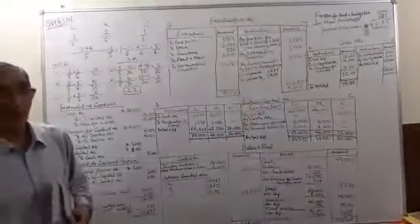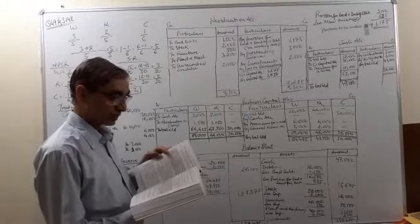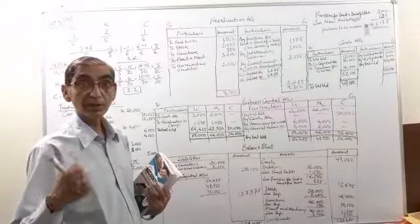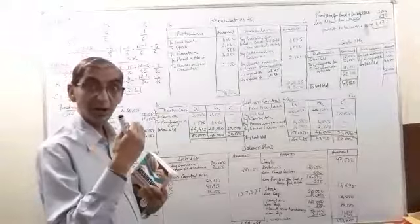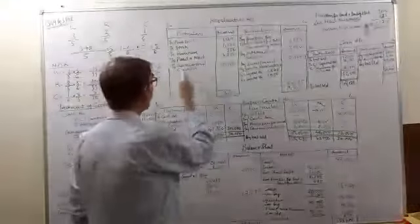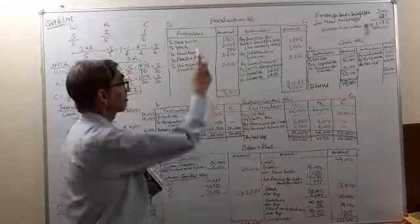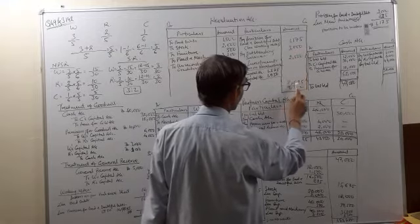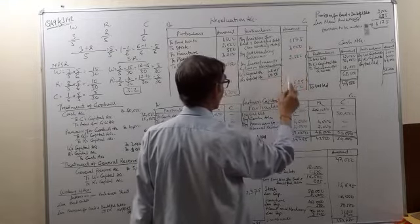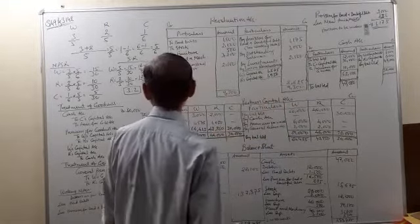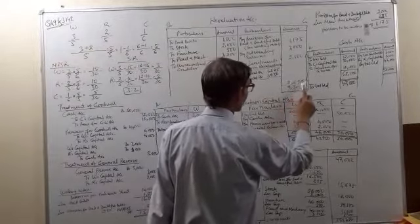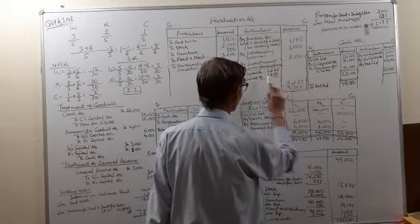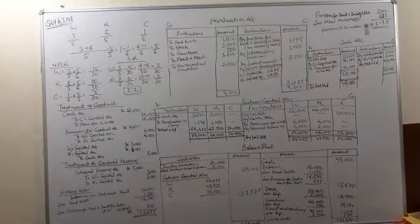A creditor of rupees 2,100 not recorded in the books is to be accounted for — our liabilities are going to increase, so unrecorded creditors will be credited to the revaluation account. Balancing the revaluation account: the debit side total is 9,300 and the credit side is short by rupees 2,625 — this is the loss on revaluation. This loss will be distributed among the partners in their old profit sharing ratio of 3:2. So 2,625 × 3/5 = 1,575 for W and 2,625 × 2/5 = 1,050 for R.